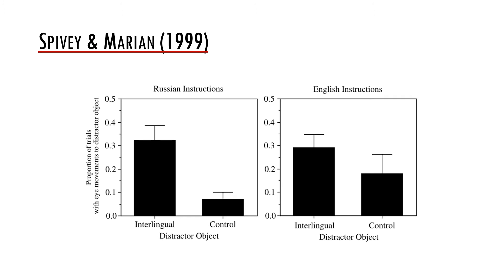Here we can see the results. In both the Russian and English version of the experiment, the participants tended to look at the interlingual distractor significantly more than at the control object. In other words, when they heard "put the marker below the cross" in the English version, in about 30% of cases they also looked at the stamp. The control condition was attended to to a lesser degree, and this difference was even more pronounced in the Russian version.